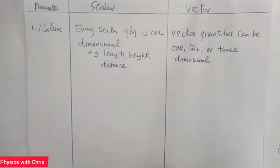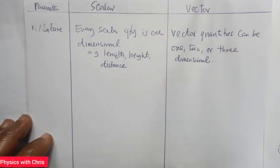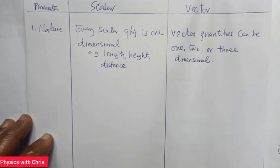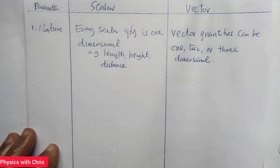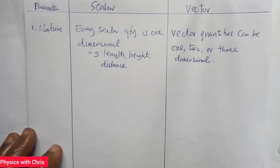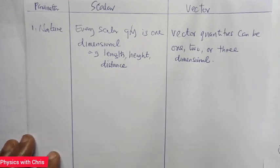In this video we are talking about the differences between scalar and vector quantities. It's very important you know a few differences because you might be asked this in your examination. A scalar quantity has only magnitude and does not have direction, while a vector quantity has both magnitude and direction.